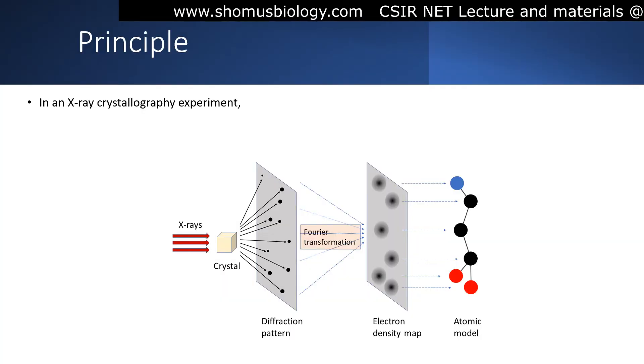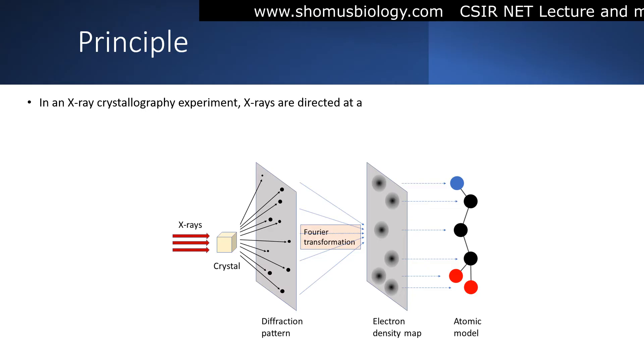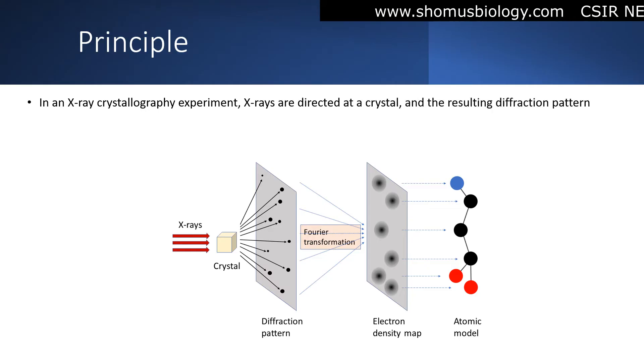In an X-ray crystallography experiment, X-rays are directed at a crystal, and the resulting diffraction pattern is recorded on a detector.